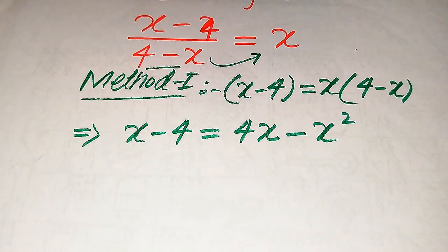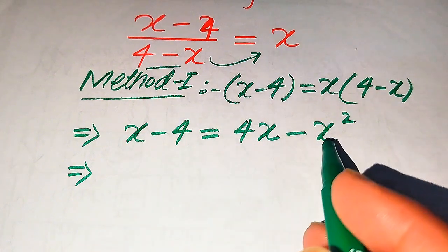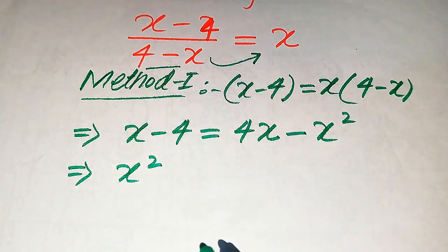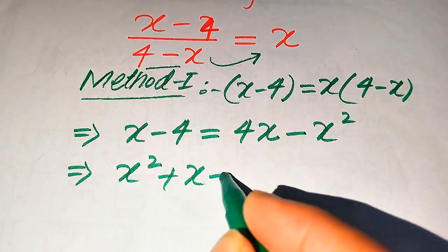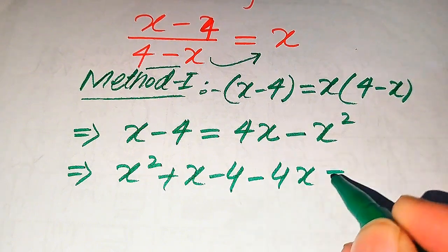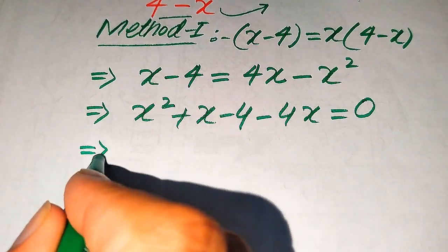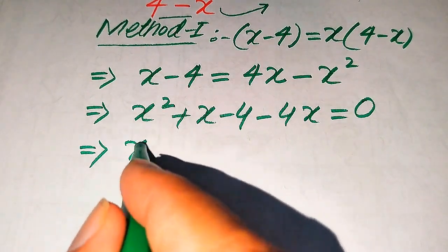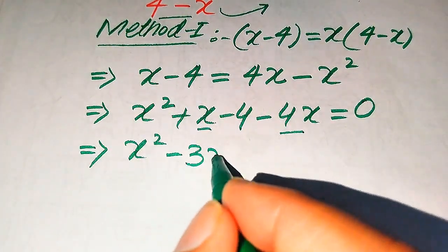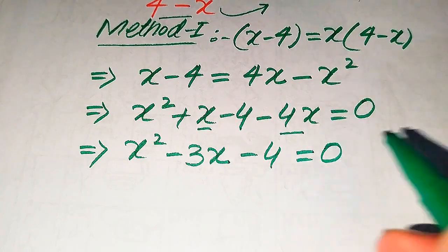We move all terms from the right-hand side to the left-hand side. The term minus x squared becomes plus x squared, plus x minus 4x gives minus 3x, and minus 4 remains, so the whole equation becomes x squared minus 3x minus 4 equals 0.